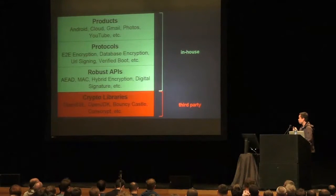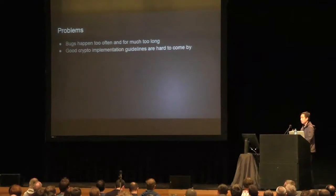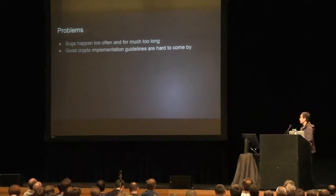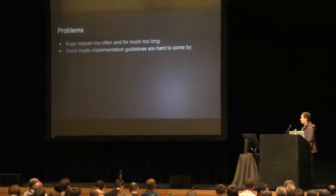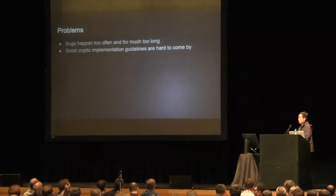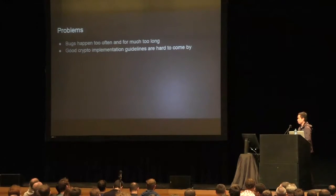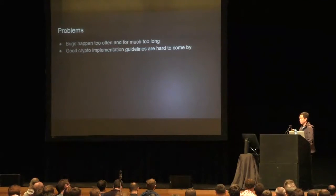The problem is we usually find that these libraries have a lot of bugs, and these bugs happen for a long time and repeat themselves very frequently. There are bugs that should have been fixed 10, 14, or 15 years ago, but somehow they are not. Another problem is we find out that it's very hard to write good crypto implementation guidelines even for smart software engineers. They don't have the necessary background to implement crypto correctly. Getting crypto correctly requires digesting decades worth of academic papers.